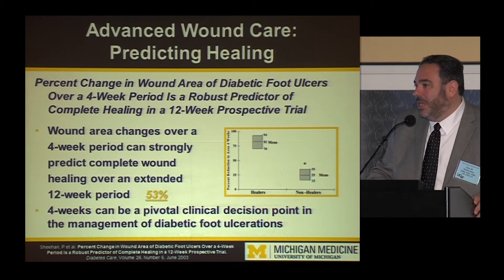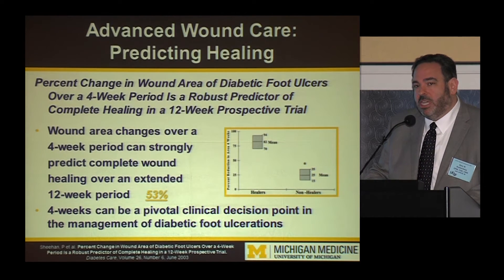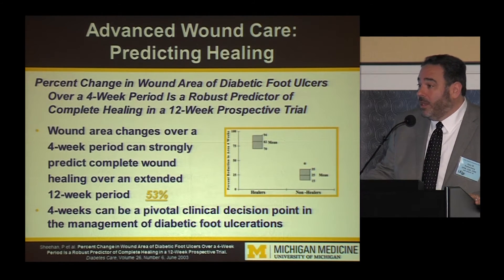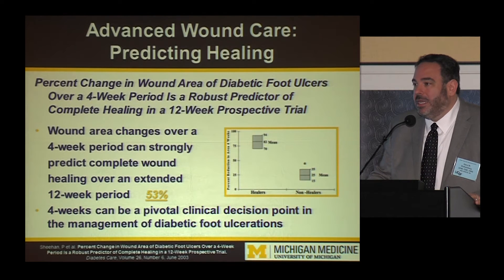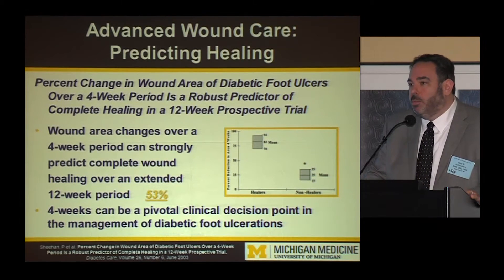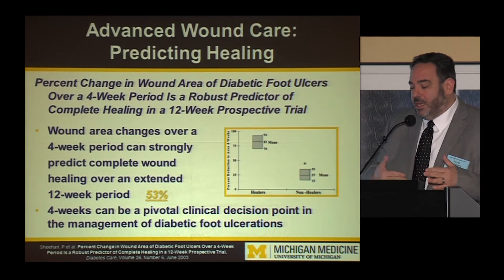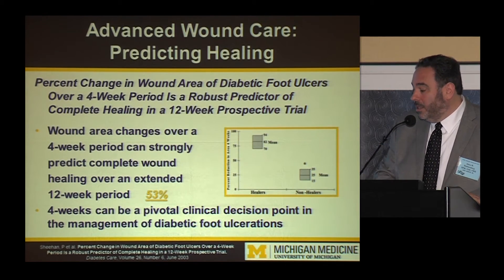Four weeks is a pivotal decision-making point to consider moving to advanced wound care. If you're not seeing that benchmark — most of us say 50% closure in four weeks — it's a guideline, not an end-all, but a rough outline. The actual numbers were different: those who went on to heal in 12 weeks had a mean closure of 82% at four weeks, while those who did not heal had a mean closure of only 25%. Wounds are either on a trajectory towards healing or they're not.